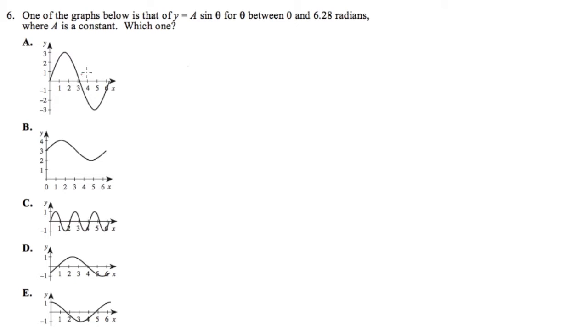Number 6, we are going to identify which of the following graphs could be the graph for y equals a times sine theta, and theta is the angle between 0 to 2 pi, because 3.14 is pi, and 6.28 radians is just 2 pi radians.